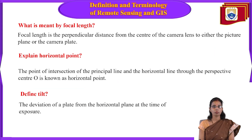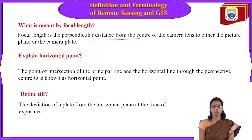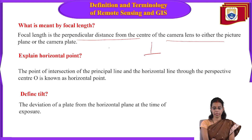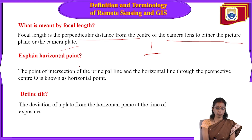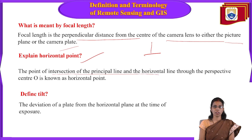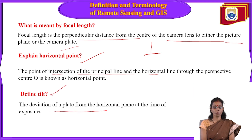The focal length is the perpendicular distance from the center of the camera lens to either the picture plane or the camera plane. The horizontal point is the intersection of the principal line and the horizontal line through the perspective center. Tilt is defined as the deviation of the plate from the horizontal plane at the time of exposure.